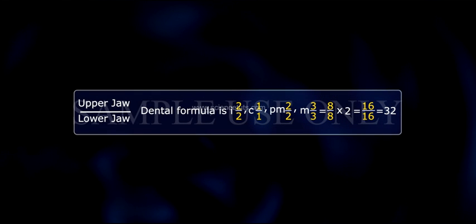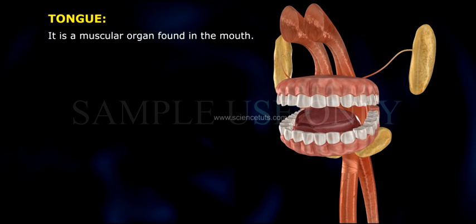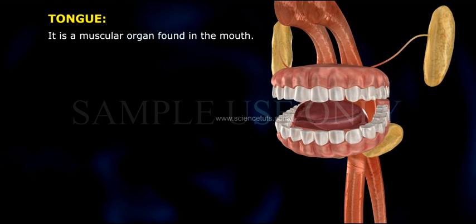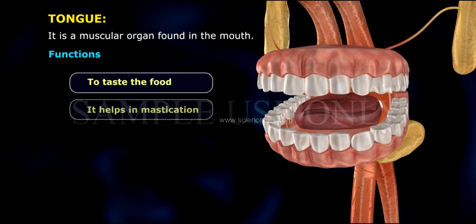The dental formula for humans is: I 2/2, C 1/1, PM 2/2, M 3/3, which equals 8/8 × 2 = 16/16 = 32 teeth total.